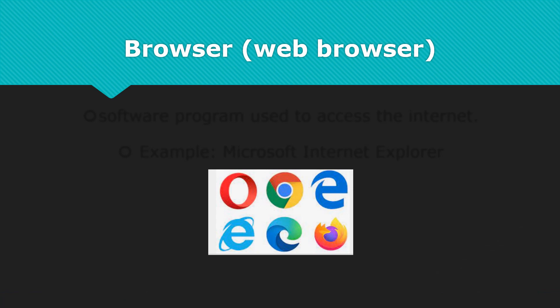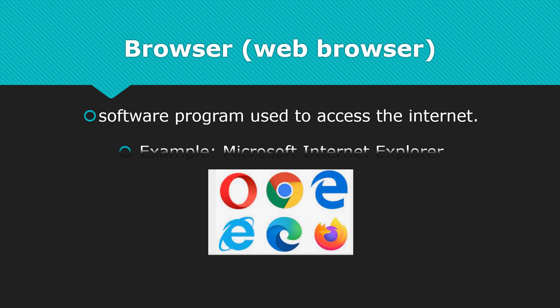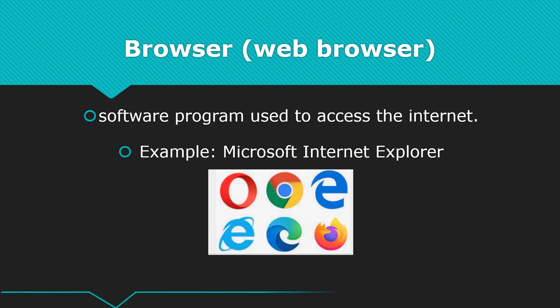A web browser is a software program you use to access the internet. Examples of web browsers include Microsoft Internet Explorer and Google Chrome.